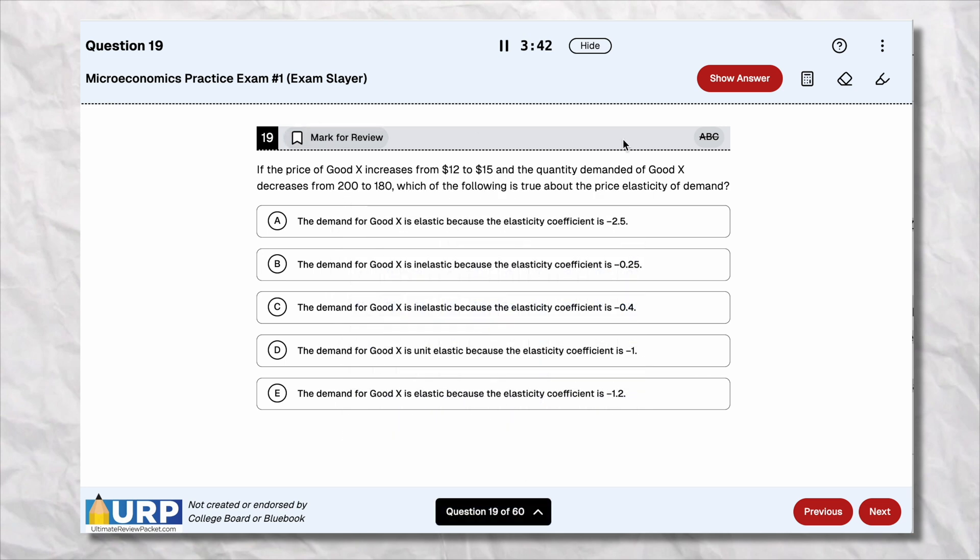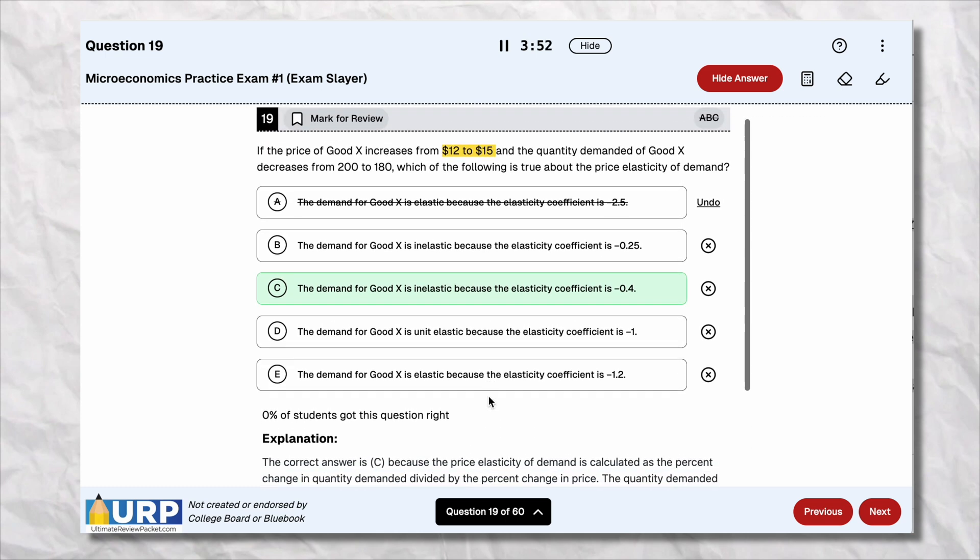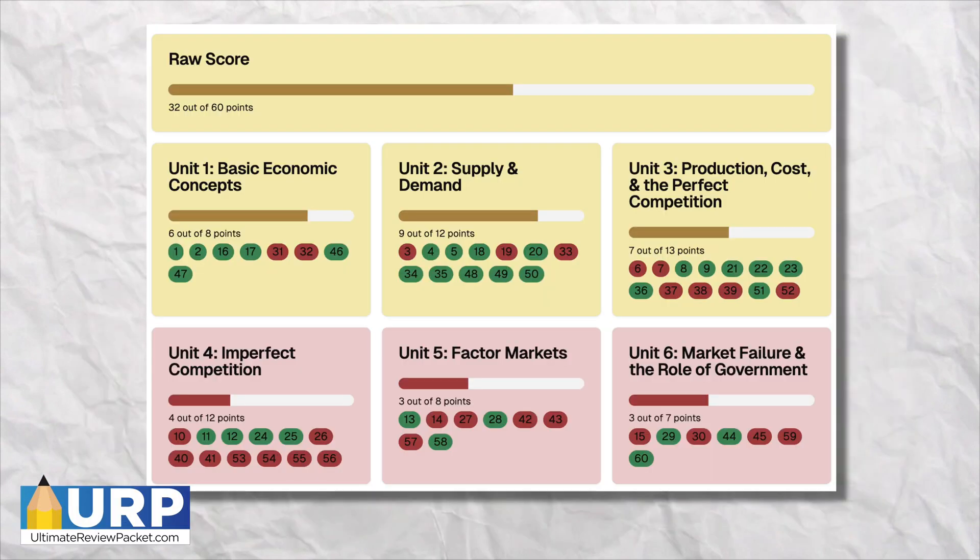And just like the AP exam, you can skip questions, mark questions to review later, strike through wrong answers, and even highlight words. But unlike the AP exam, you can also click on Show Answer to give you an explanation of why the right answers are right and the wrong answers are wrong.